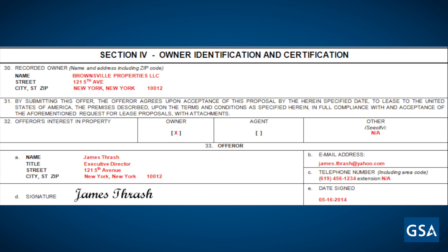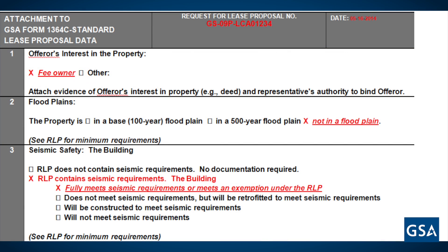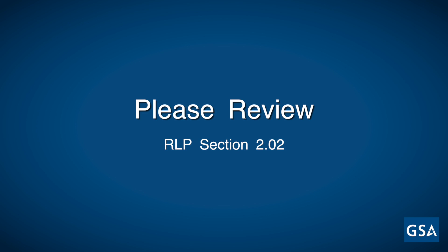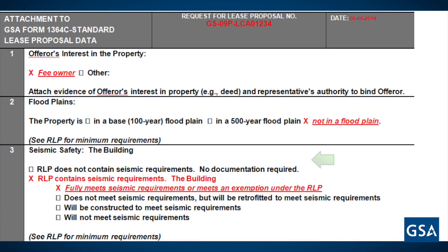Last but not least, here is Section 4. Complete the recorded owner information in Box 30. Check what your interest is in the property, whether you are the owner or agent. List your information and sign and date. The Lease Proposed Data Form deals with ownership interests, life safety, and other aspects of the property being offered. Question 1 inquires about the ownership of the property — list if it's a fee ownership or other. Question 2 is in reference to floodplains. List your property as either in a 100 or 500 year floodplain. GSA does not award leases in a 100 year floodplain unless it is determined that there is no other alternative. Reference Section 2.02 of the RLP to understand the floodplain requirements.